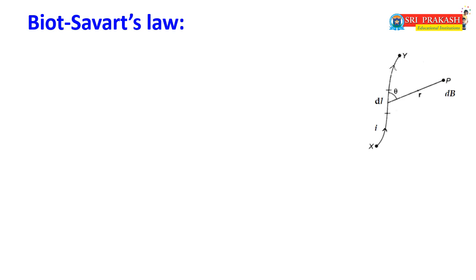Biot-Savart's Law. Biot and Savart studied current-carrying conductors and the magnetism produced by them. They analyzed the magnetic induction produced by current-carrying conductors and identified four factors affecting the magnetic field. To analyze this, consider a current-carrying conductor XY with current I passing through it. The conductor is divided into infinitesimally small elements, for example dL. Using this law, we can find the magnetic induction for any shape of conductor - straight line, coil, or rectangular.